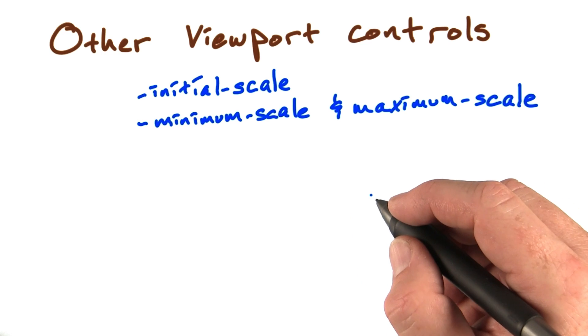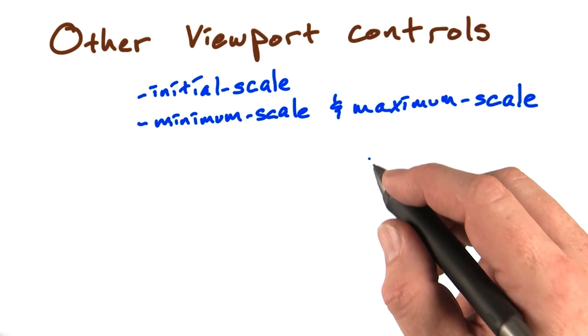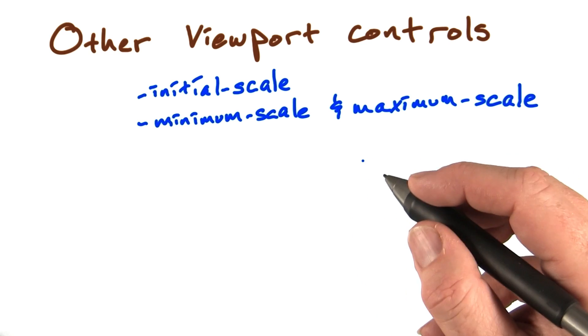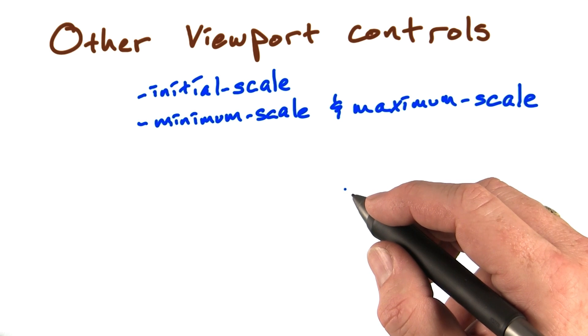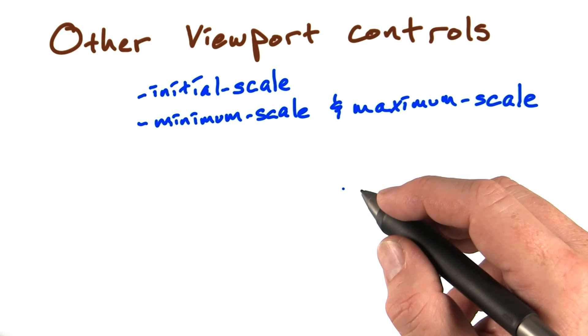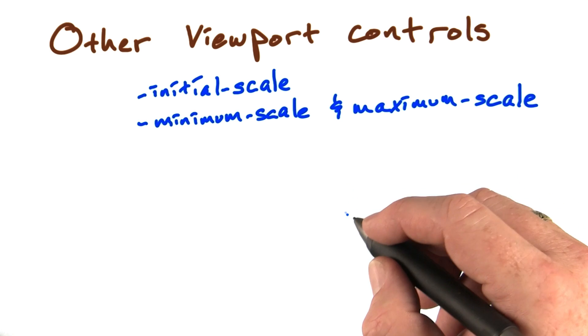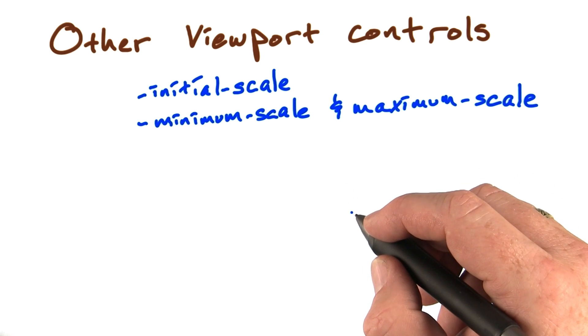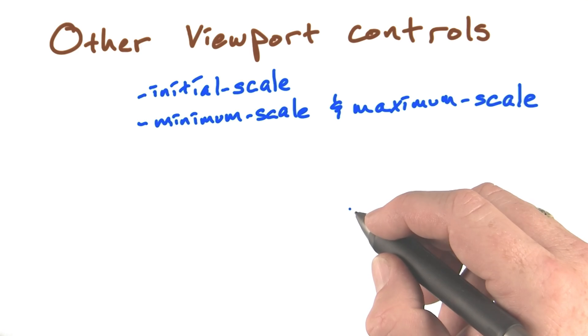There are also minimum scale and maximum scale properties, which is a way to limit the extents that the system is allowed to scale the page on the device. This seems a little esoteric at first, but there is one use that I wanted to mention.